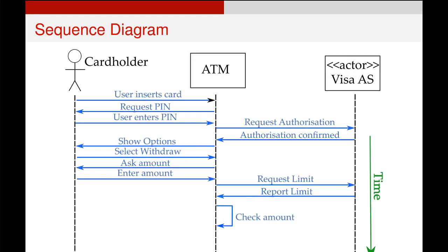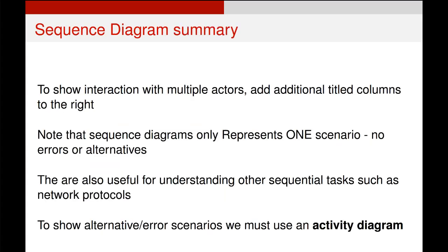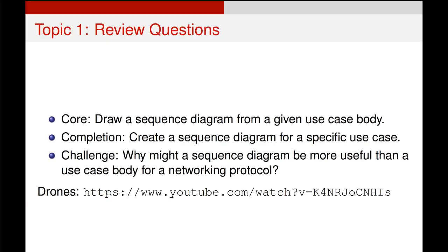If it requires the system to do something but doesn't require input from any other actors, that's fine, and with that we've filled in our sequence diagram. All of these steps map back to that main success scenario from the use case body we saw in the earlier slides. Sequence diagrams are very useful in particular for understanding sequential tasks like network protocols, but they don't show alternative or error scenarios. For those cases, we'll use activity diagrams, and they are the topic of the next video.